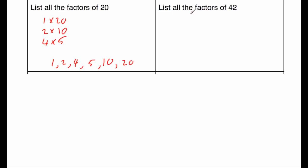Our next question says list all the factors of 42. Well, 1 times 42 is 42, 2 times 21 is 42, 3 times 14 is 42. We've also got 6 times 7 is equal to 42. So the factors of 42 would be 1, 2, 3, 6, 7, 14, 21, and 42.